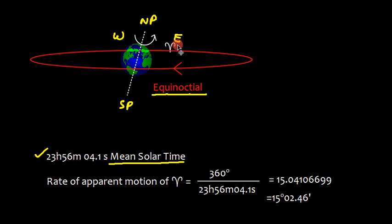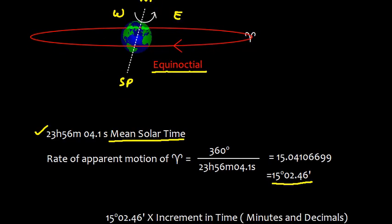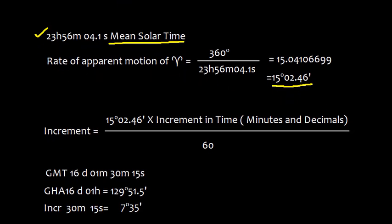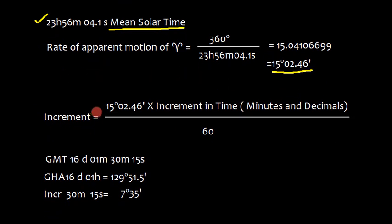The first point of Aries will appear to be rotating with this speed. So we can easily find the rate, and the rate is 15 degrees 02.46 minutes, that is hourly rate. We can easily find the increment, and for that increment, we can have 15 degrees 02.46 minutes into increment in time minutes and decimal divided by 60.